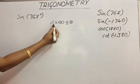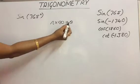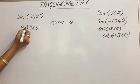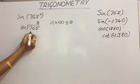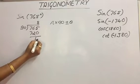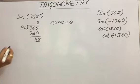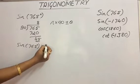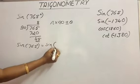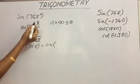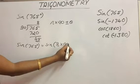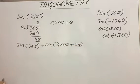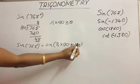First we will consider the plus representation, that is n×90 + θ. To get that representation, first divide 765 by 90. We will get 8×90, that is 720. The remainder will be 45. So write sine of 765 equal to sine of n×90 — n is now 8 — so 8×90 + θ. The θ value will be the remainder, that is 45. So this is now sine of 8×90 + 45.